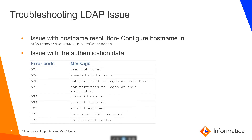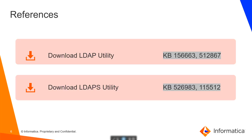Troubleshooting LDAP issues: sometimes the client machine may not be able to resolve the provided hostname, which can cause LDAP authentication to fail. In that case, we can add the hostname and IP address of the LDAP server to the hosts file. This file can be found on the client machine. Also, on execution of the LDAP utility, sometimes we might see certain error codes, which indicate an issue with user credentials provided in the LDAP properties file and not with the LDAP connection. The following KBs can be referred to download the LDAP utilities.